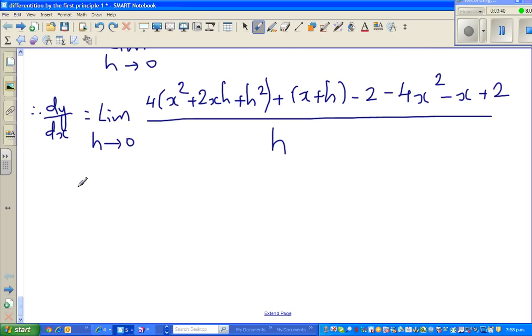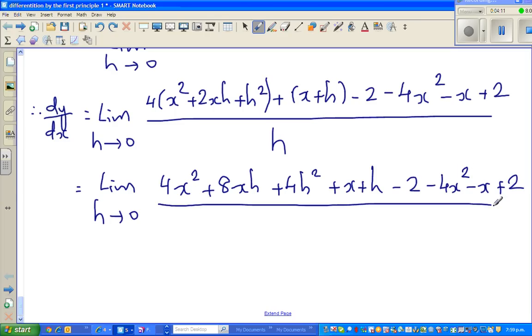So this is equal to limit when h approaches 0 of 4x squared plus 8xh plus 4h squared plus x plus h minus 2 minus 4x squared minus x plus 2, the whole over h.